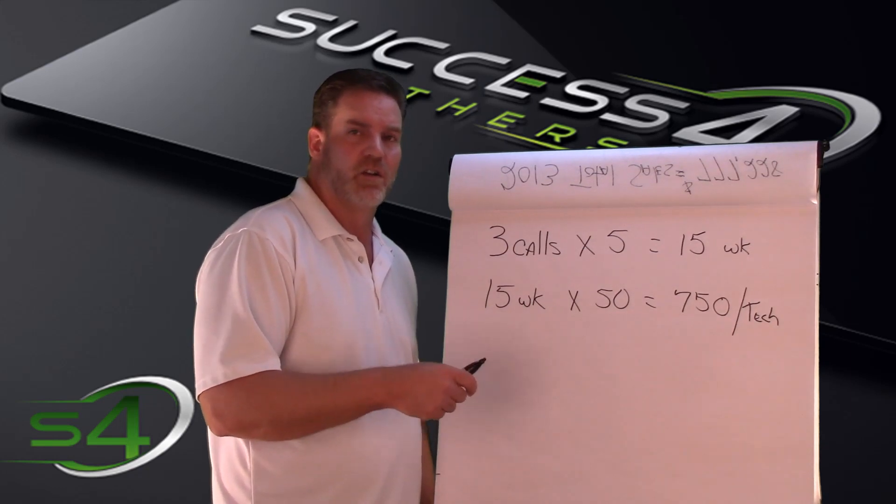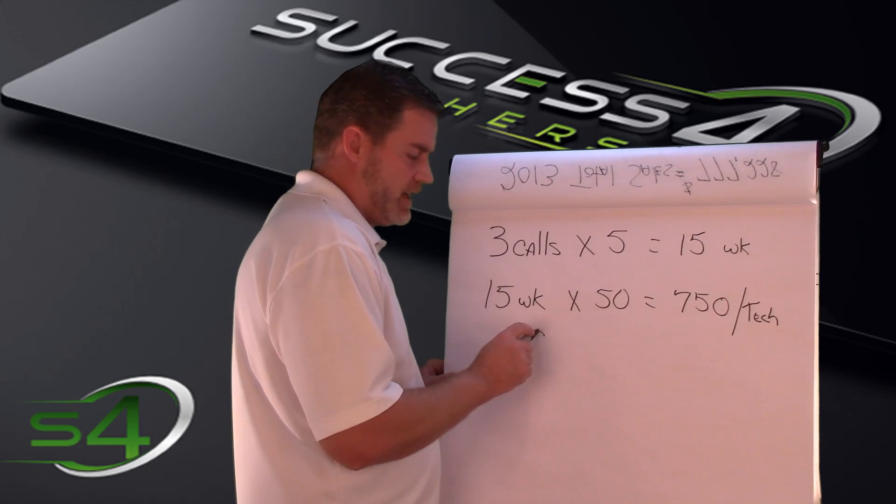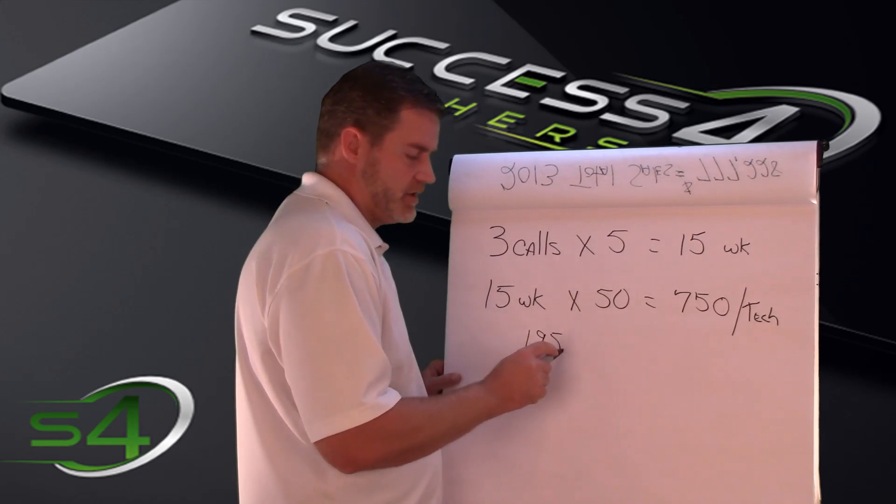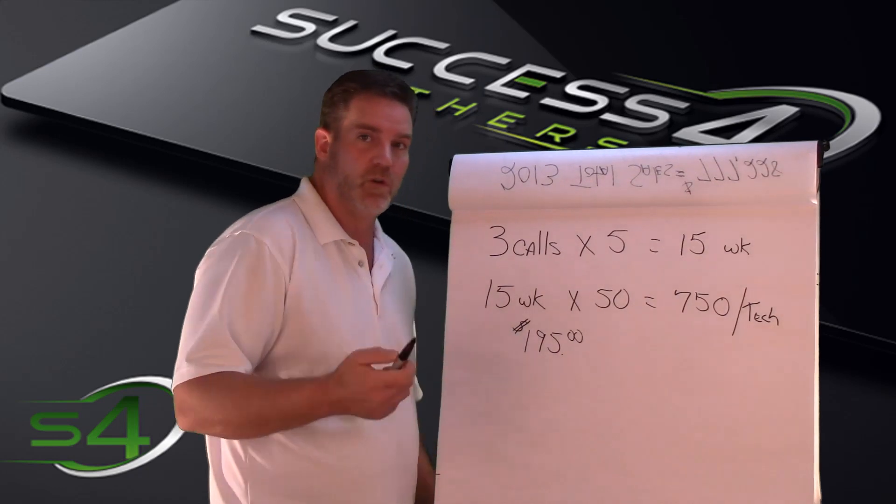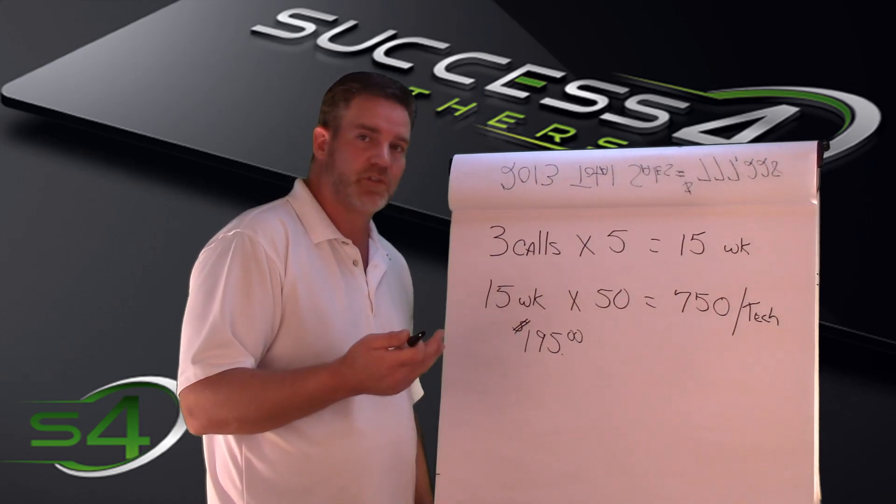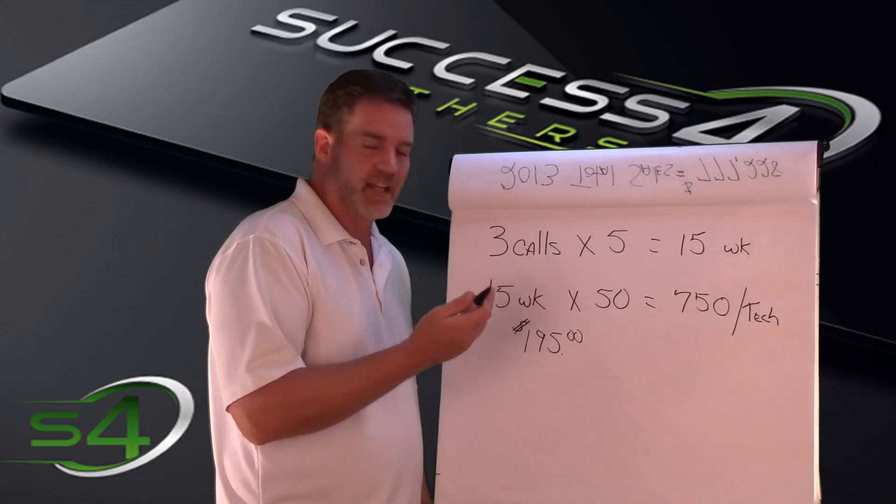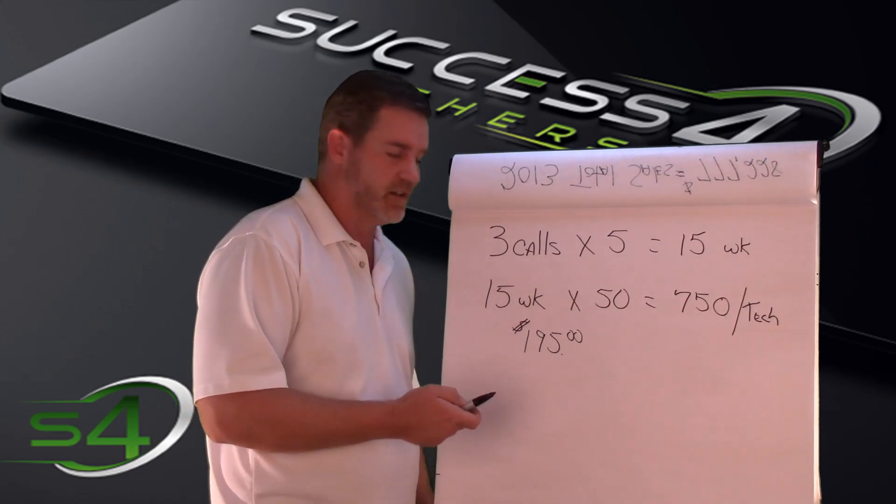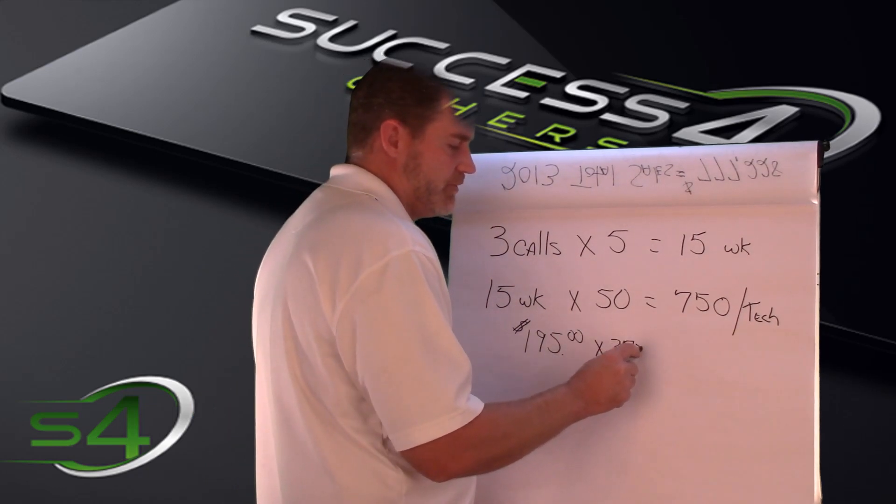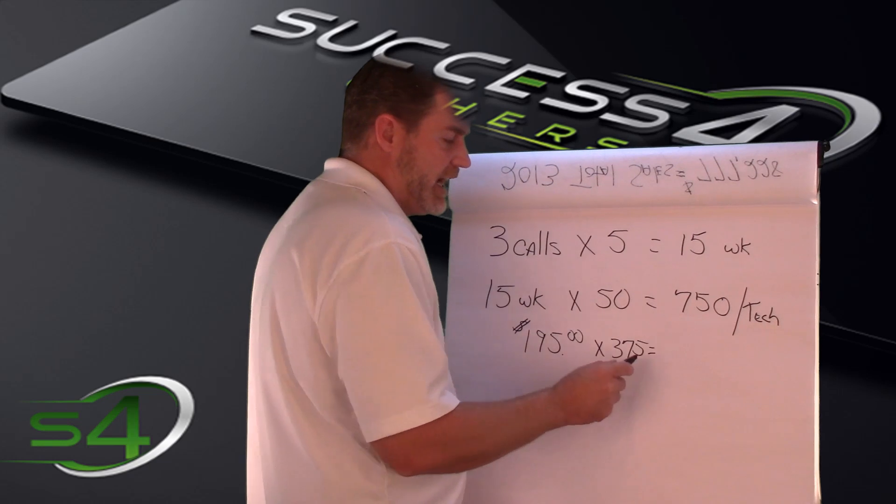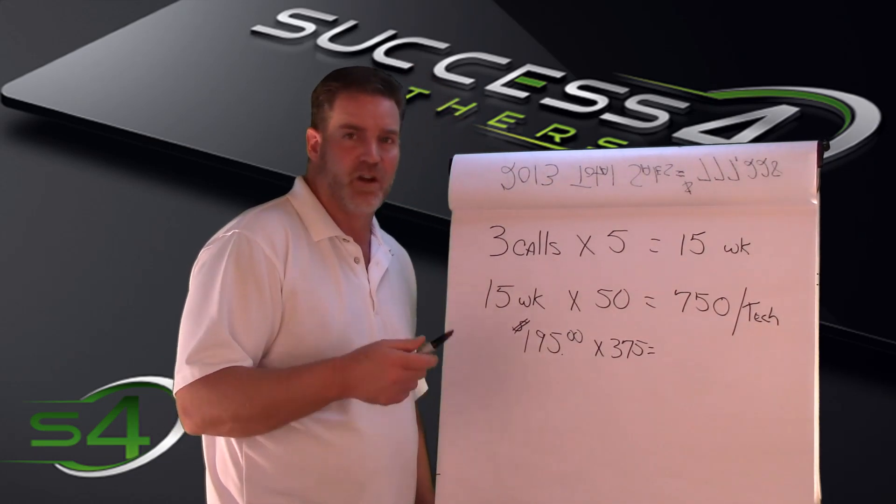If you sell a maintenance agreement for—I'm just using math as an example, whatever your price is—some people charge as little as $99 a year, others as much as $400. Let's find something in the middle and say it's $195 a year times those 375 opportunities you converted. That would translate into $73,125 of cash per year just from one technician.